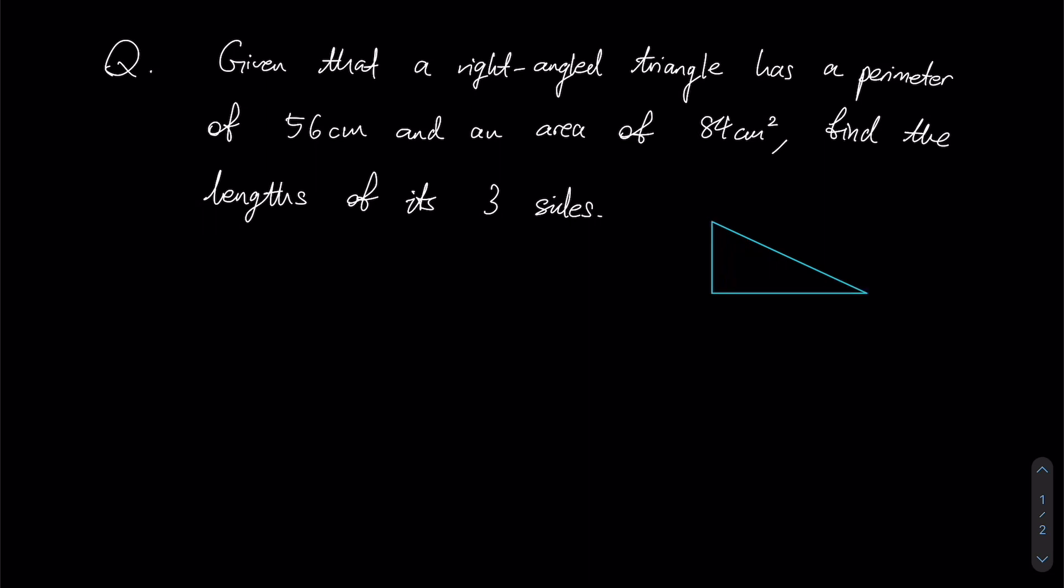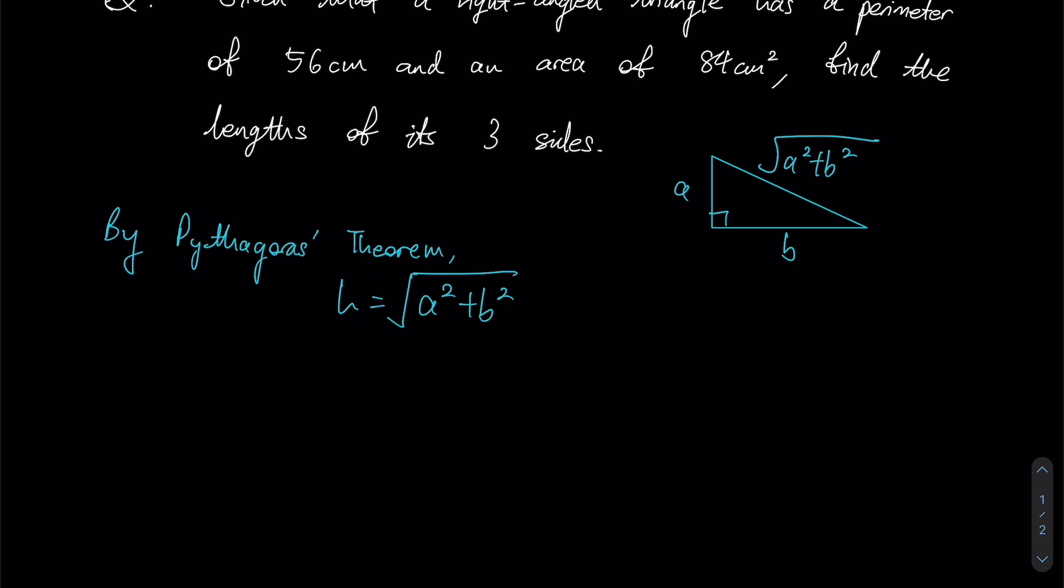So it looks something like this, where my perimeter is 56 and my area is 84. Let us first label our sides, let this be A and B, and by Pythagoras theorem, we should be able to express the hypotenuse, which I am going to label H in terms of A and B: A squared plus B squared, square root. So this is what I am going to be writing alongside our diagram.